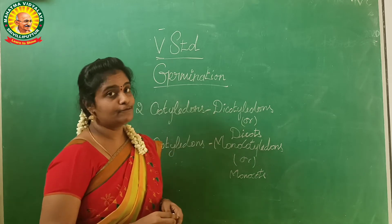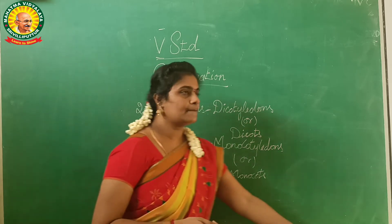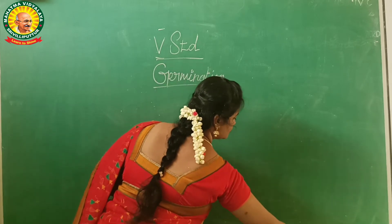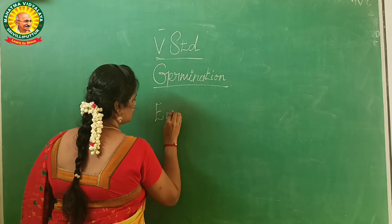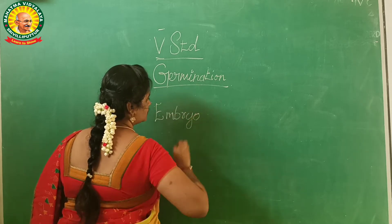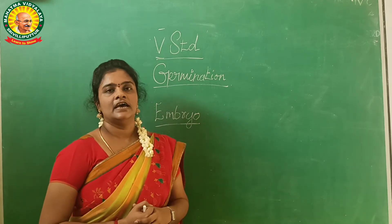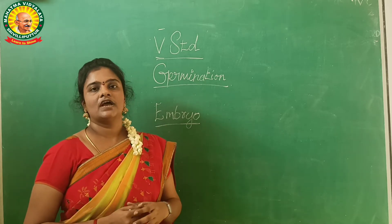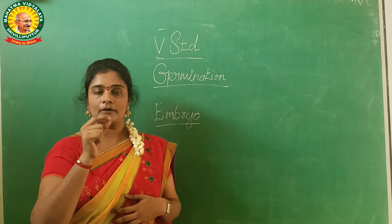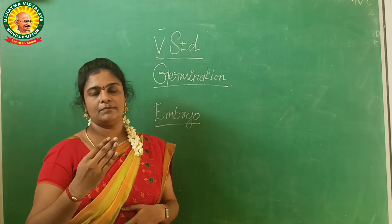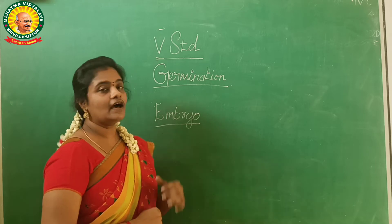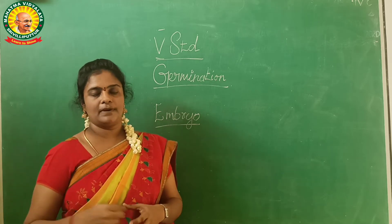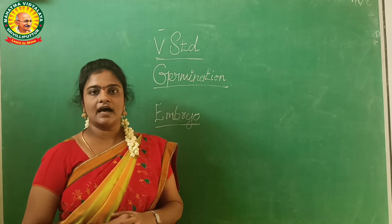So in this we have seen about the embryo. Yesterday we said we are going to see about the embryo also. What is embryo? Embryo means it is a process where from the seed there is a new plant coming in. If you are having a small seed, from the seed we will get a baby plant. From that baby plant we will get a new plant. That process is called the embryo.